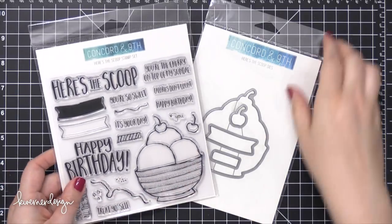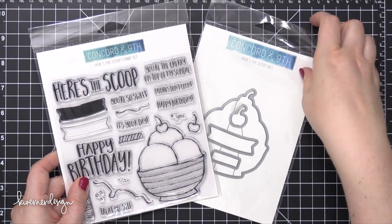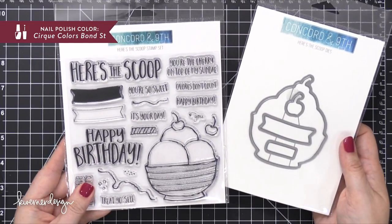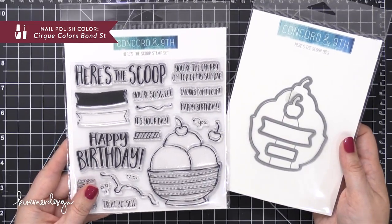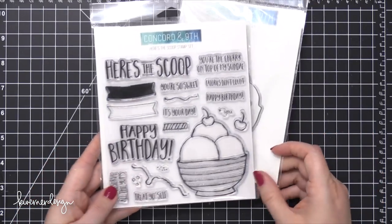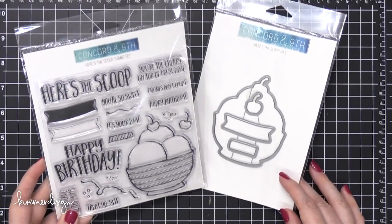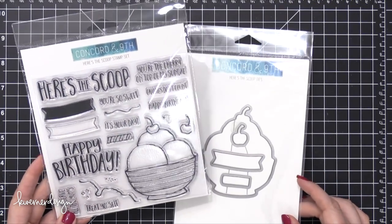Hi everyone, Kristina here. Welcome to another card video at my YouTube channel and blog. Today I'm going to be using a bunch of new supplies from Concord & 9th. I've got some stamps and dies. Here's the Here's the Scoop stamp set and also the coordinating die set. I'm also going to be using another stamp set later on in the video too.